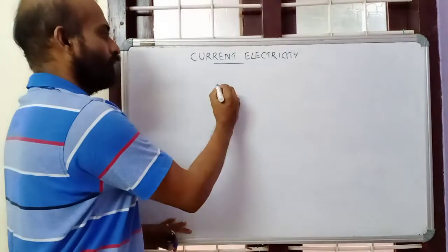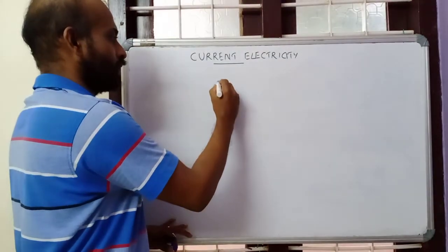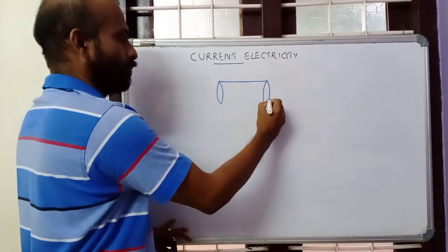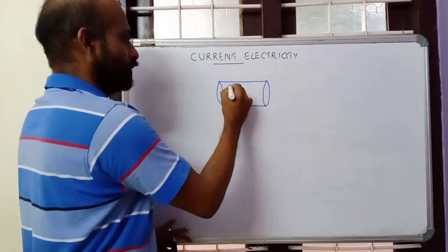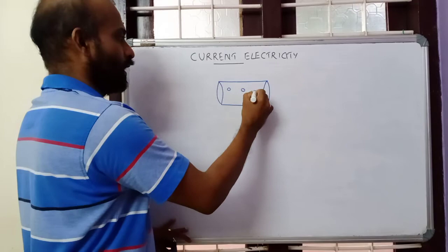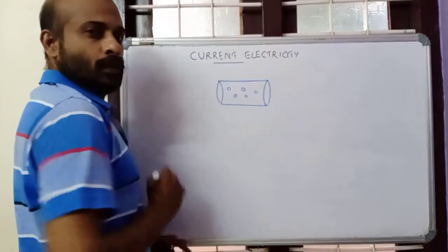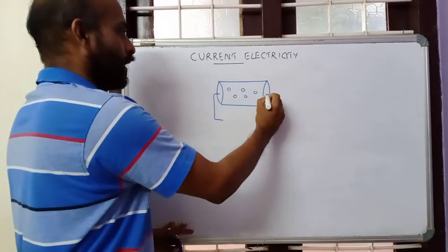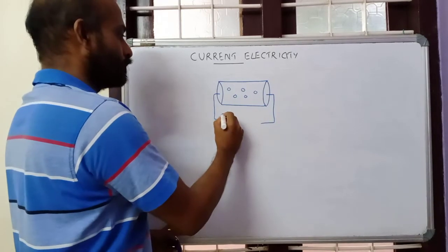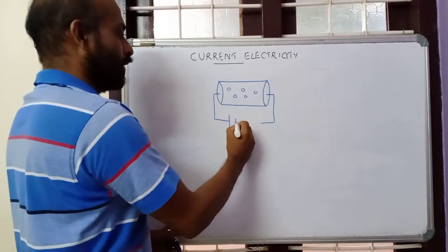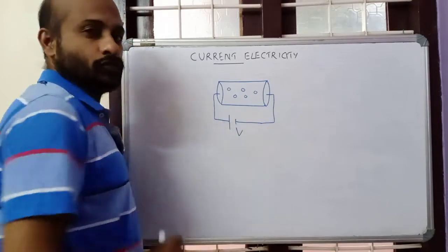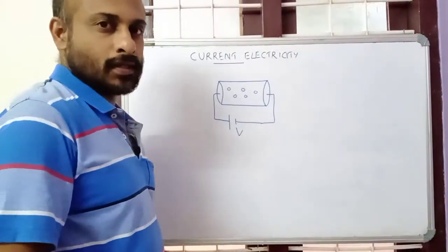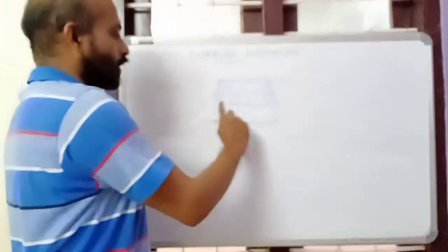In 10th standard, you have seen that if you have a current carrying conductor — this conductor drawn in a bigger size — it will contain a large number of free electrons. Now when you apply a potential difference, when you connect a battery across the ends of the conductor, if this is a battery having a potential difference voltage V, the electrons will experience a force.